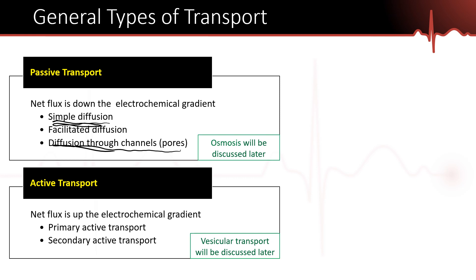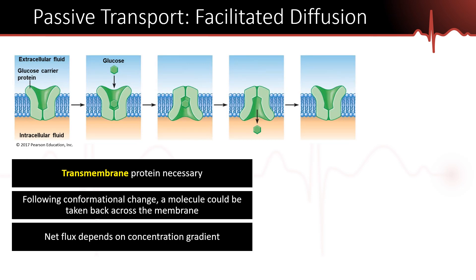We went on that tangent to explain what actually dictates osmosis — osmolarity and osmotic pressure — and now we can get back to talking about the last type of passive transport. The last type is what's called facilitated diffusion. Facilitated diffusion is a type of passive transport — molecules move from a high concentration to a low concentration without any energy.